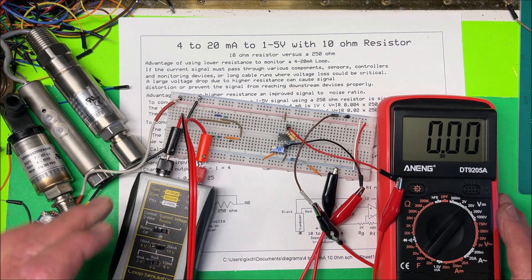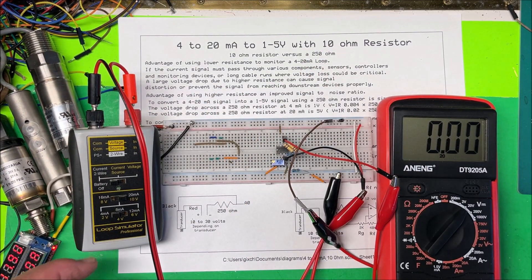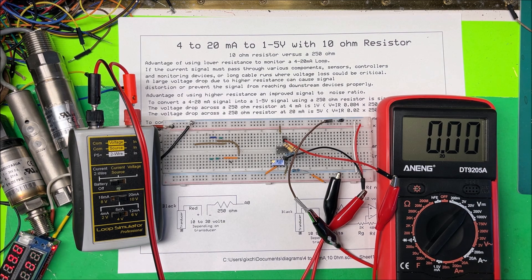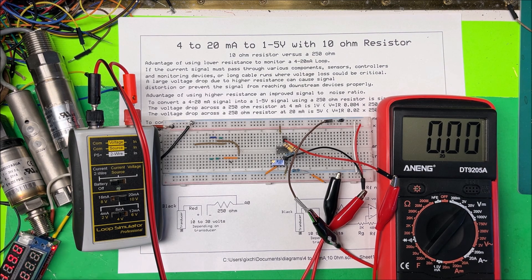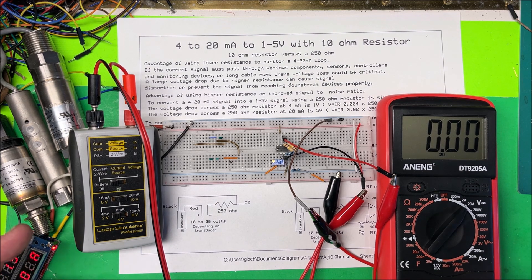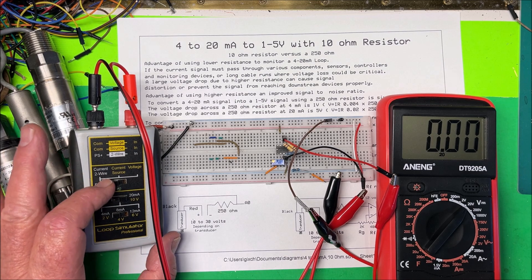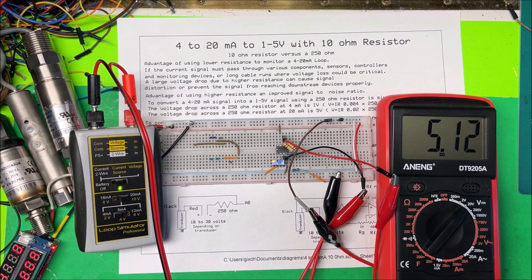And what I have here is a loop simulator. We use that to test these loops. It puts out current or voltage, or you can use it as a two-wire loop there. So I'm going to put it on 20 milliamps current source.